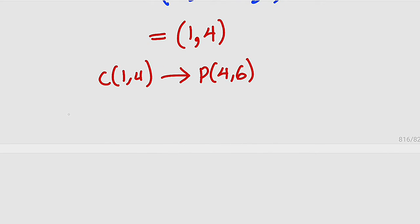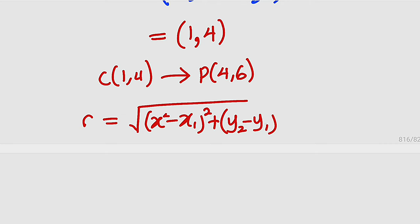So what is the distance formula? The distance formula, which in this case is our radius, equals the square root of (x₂-x₁)² + (y₂-y₁)². Right? So let's substitute. We can start from either point. Let me start from P.